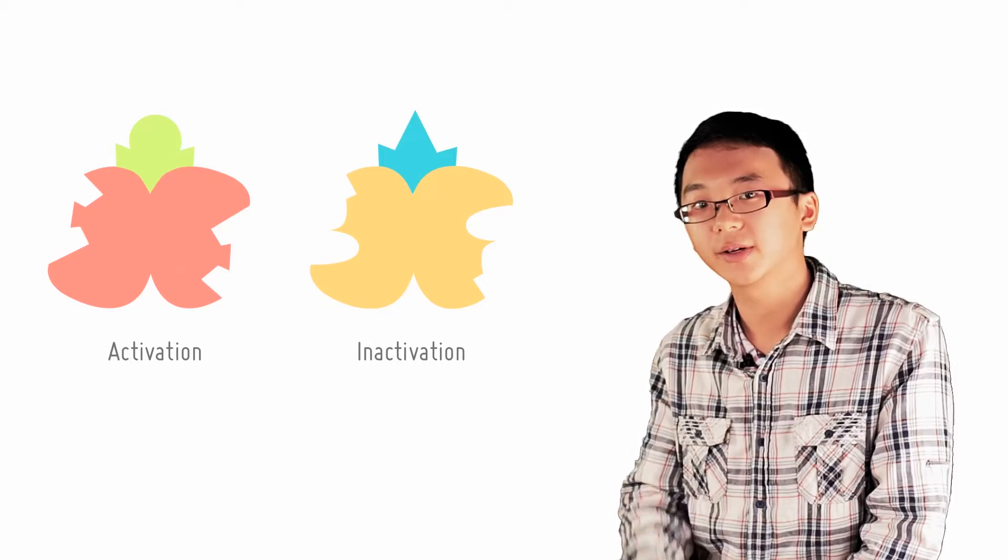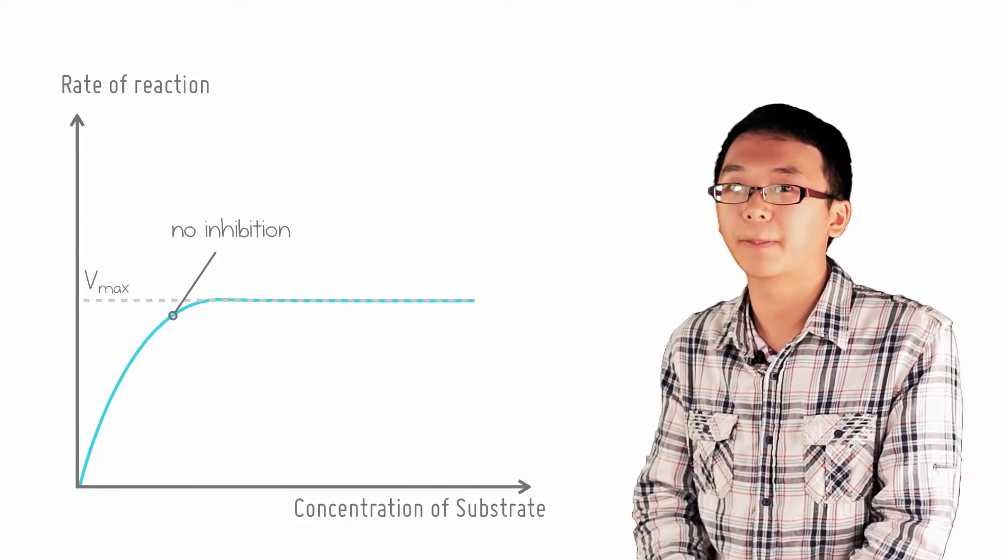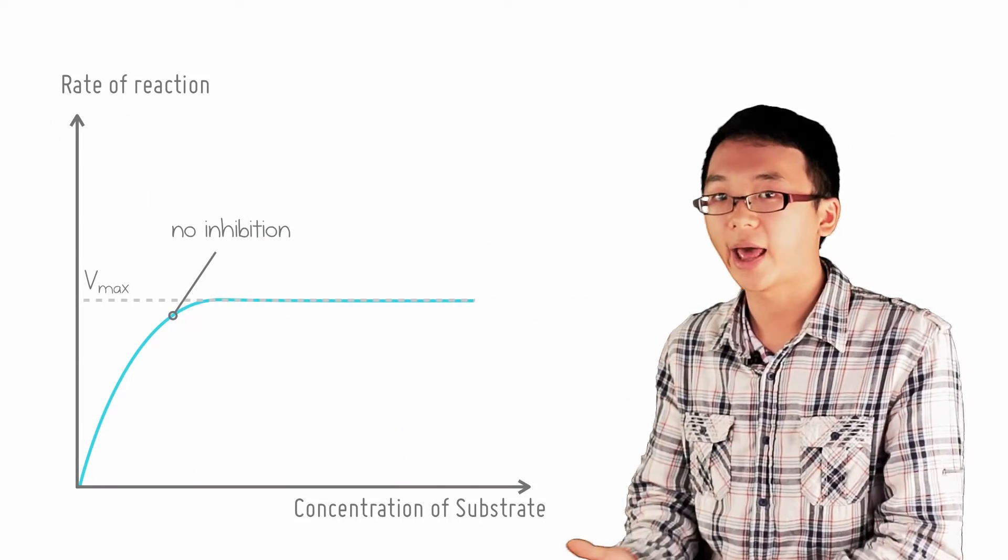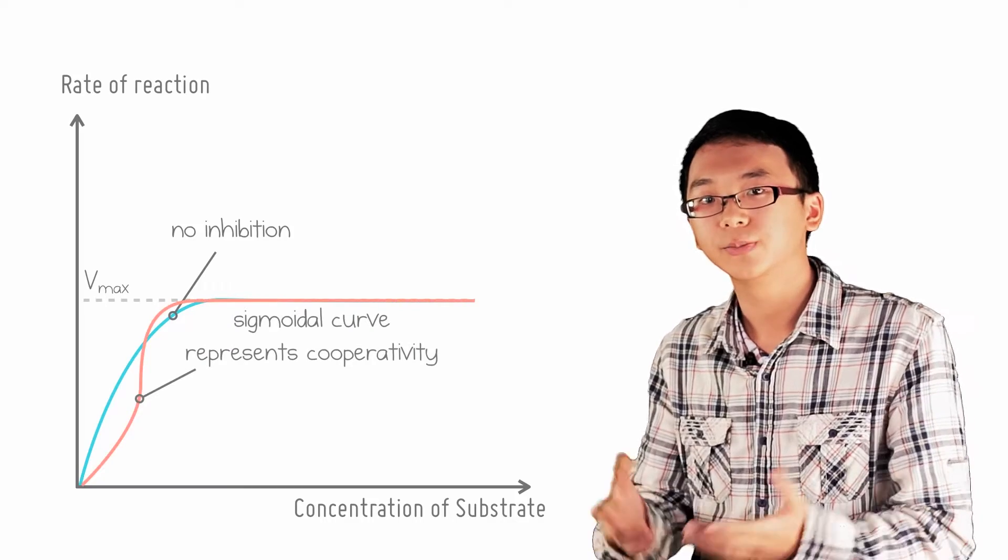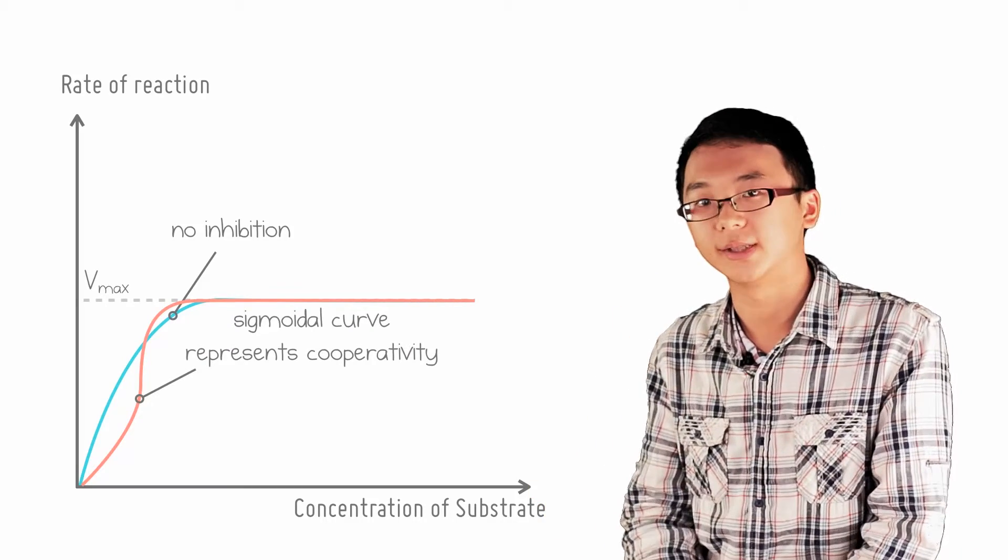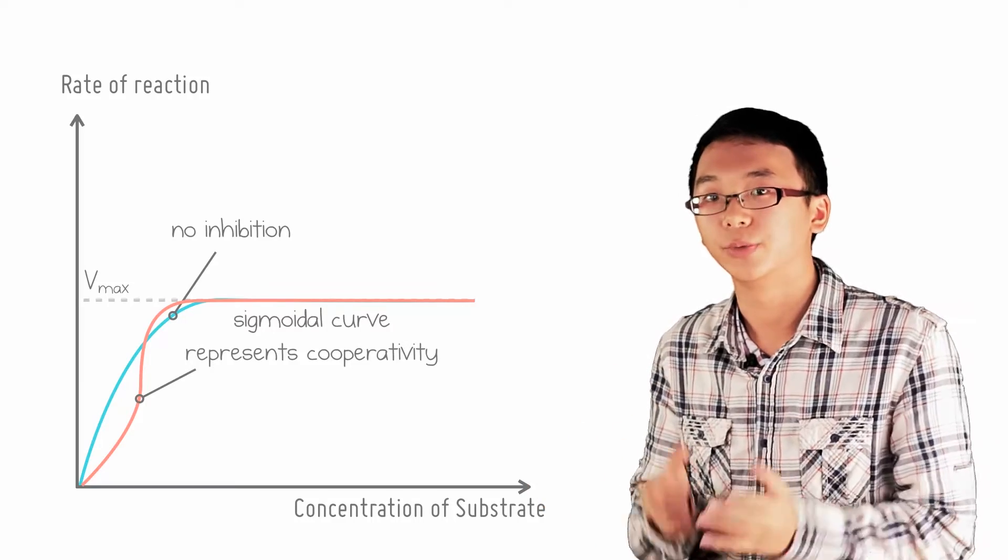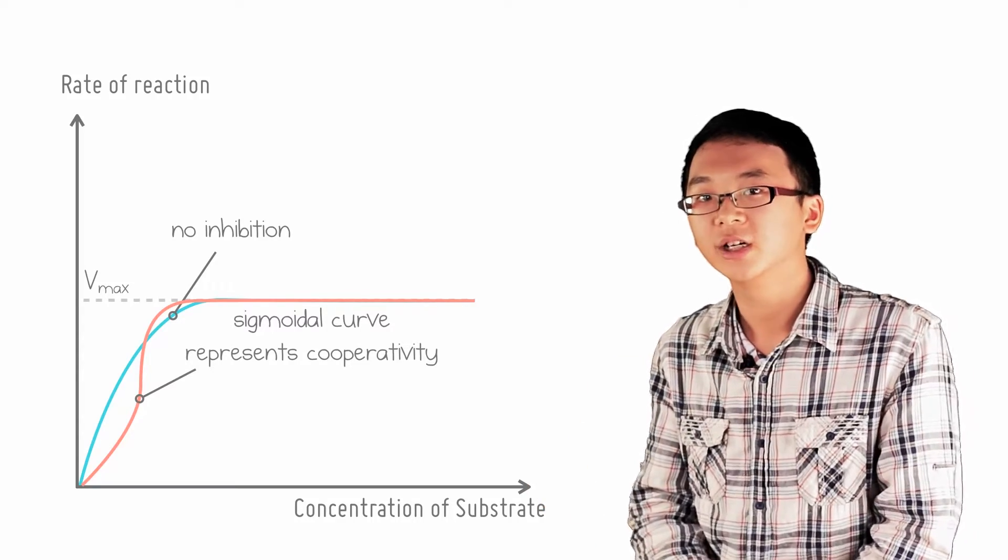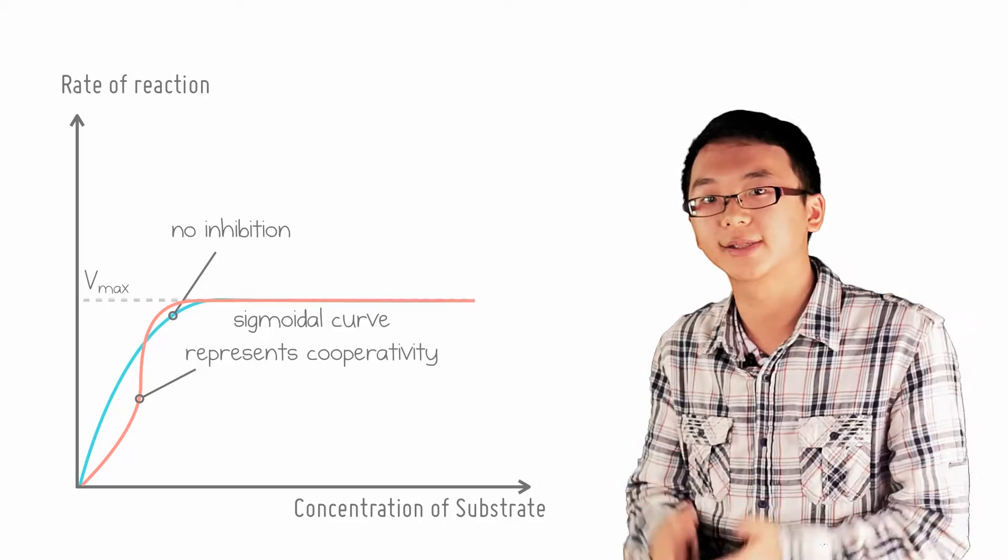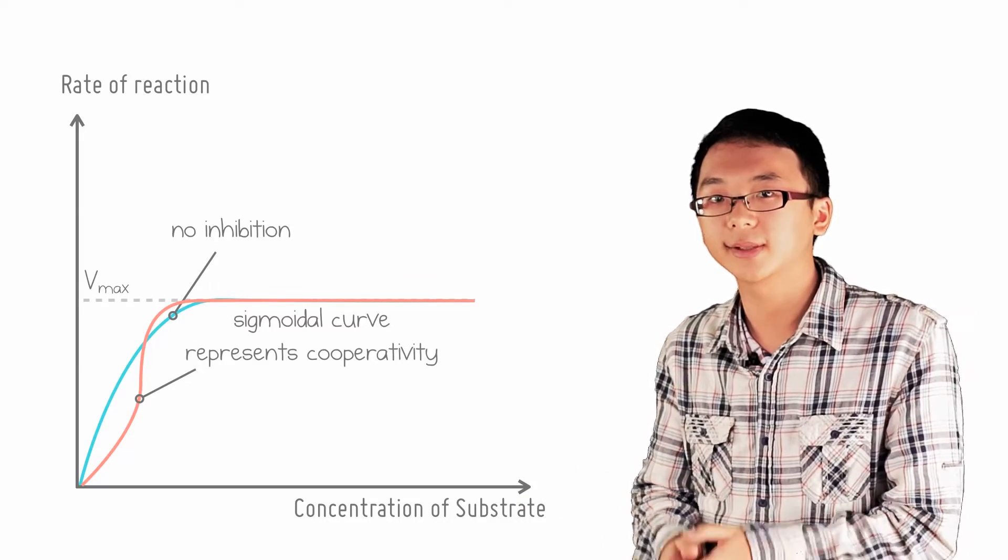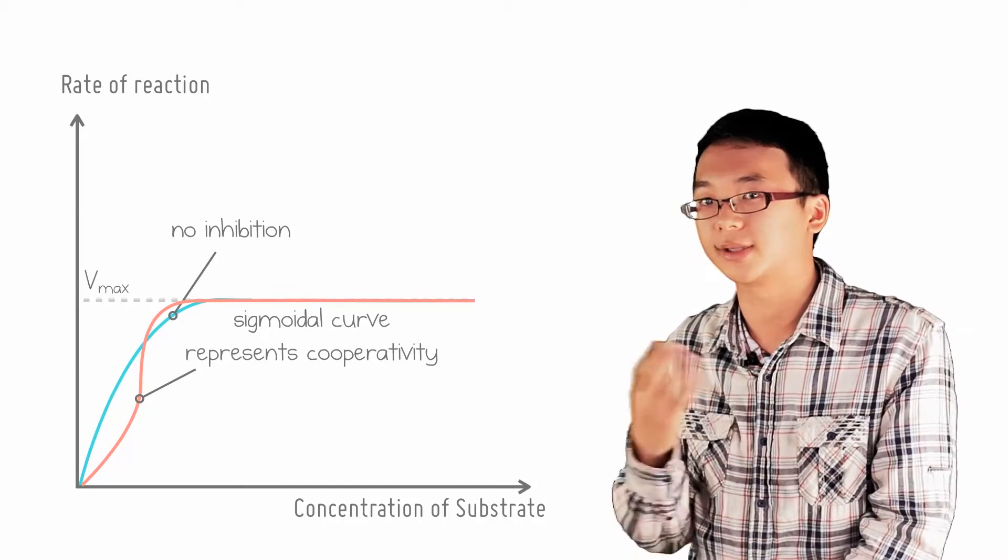When the enzyme is active, the graph of the rate of reaction of a multiple-subunit enzyme is an S-shaped sigmoidal curve due to the concept of cooperativity. The binding of substrates, not just inhibitors or activators, changes the conformation of the other subunits such that it becomes easier to accept subsequent substrates.